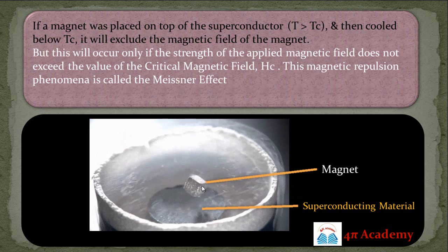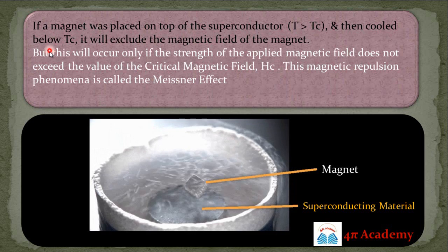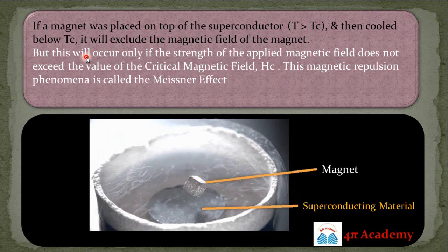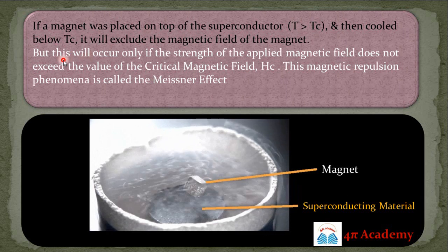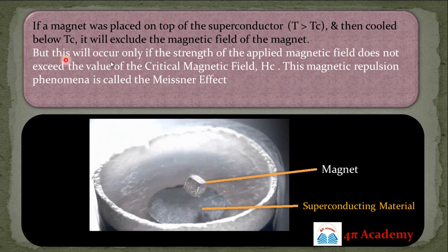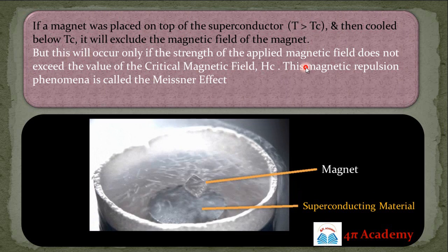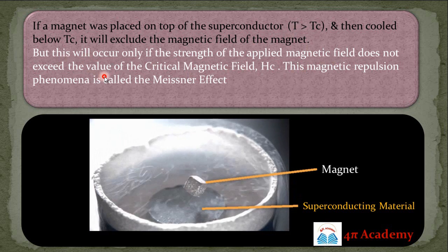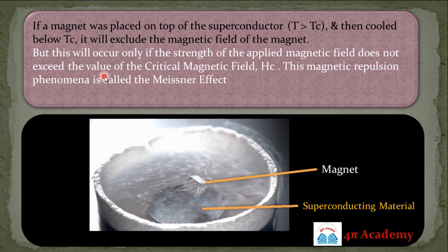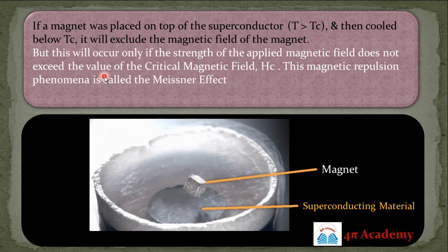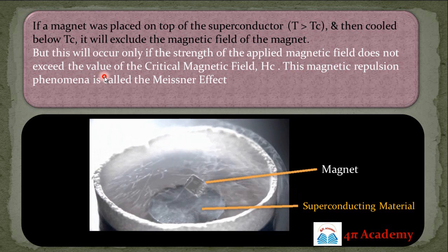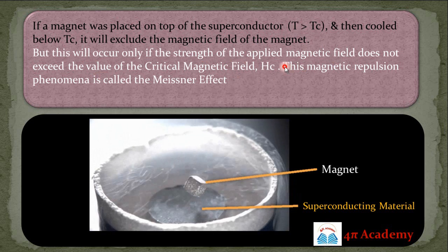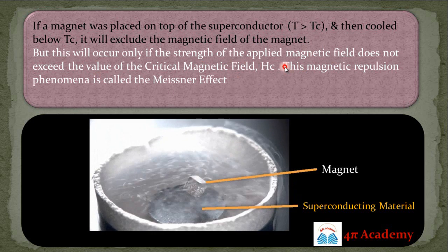One important thing to understand when learning about the Meissner effect is that the strength of the magnetic field you are applying must not exceed the value of the critical magnetic field, H_c. As we learned in the previous slides, the critical magnetic field H_c is the field required to destroy the phenomenon of superconductivity.